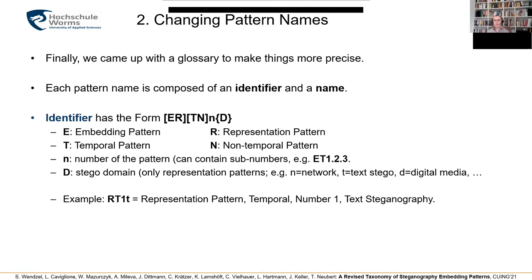There is a definition of how pattern names must look: they contain an identifier and a name, and the identifier follows a structured format. The first letter tells us whether it's an embedding or representation pattern; the next letter tells us whether it's a temporal or non-temporal pattern. Then it has some number, and optionally — but only for representation patterns so far — a domain indicator. If it's specific to network steganography it would be lowercase N, text steganography lowercase T, and so on. So a pattern identifier would look like RT1T.